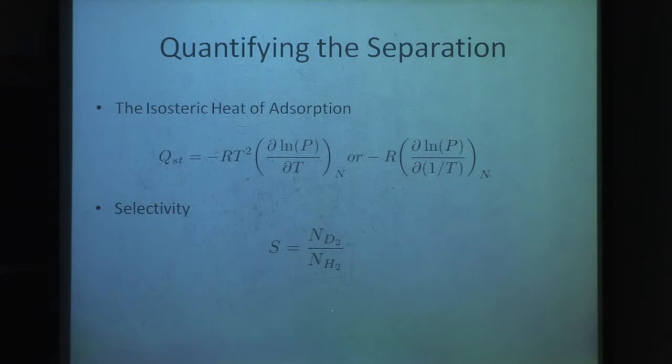So basically we've used our data at a given pressure, loading and temperature to compute this derivative. It's essentially a measure of how the adsorption changes with temperature. Another more straightforward way to look at it is simply the ratio of how much D₂ is adsorbed to how much hydrogen is adsorbed as a function of temperature and pressure, which is the selectivity.